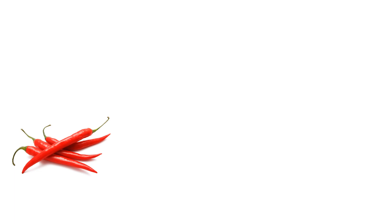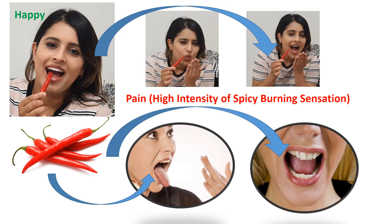Pleasure and pain are interrelated. When we consume spicy foods or foods with chili, this provides a burning sensation which is pleasant and gives us pleasure. However, this pleasure could become a pain if the burning level is very high. Therefore, pleasure and pain are interrelated depending on the intensity. For example, smooth and gentle rubbing on the skin could be a pleasure, while it could be a pain at a very high intensity level.